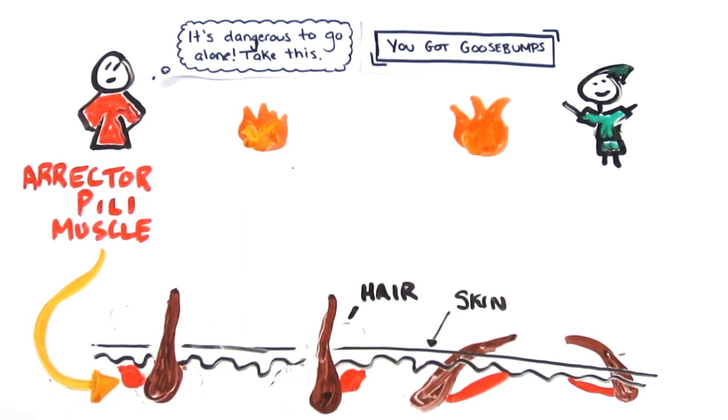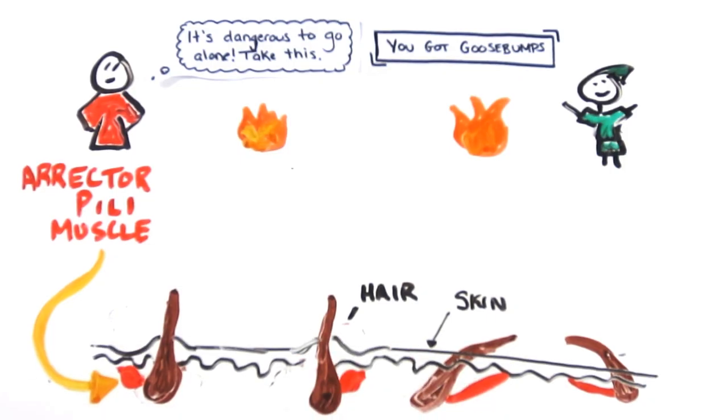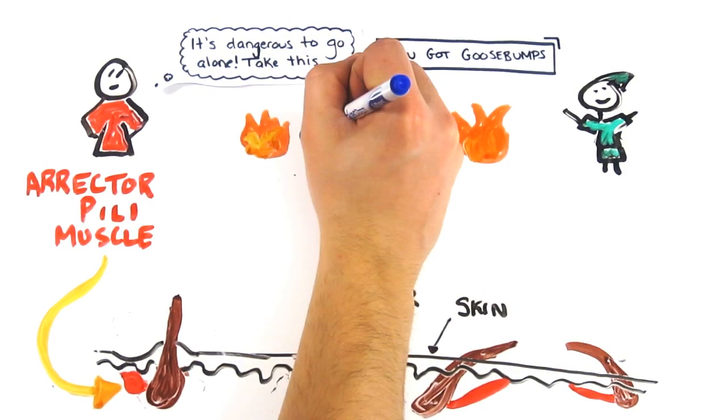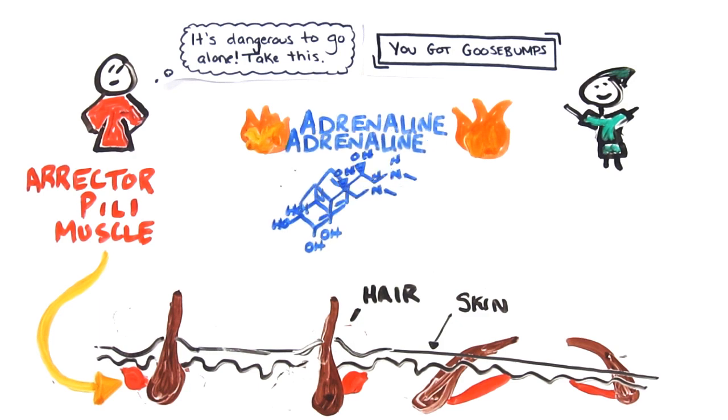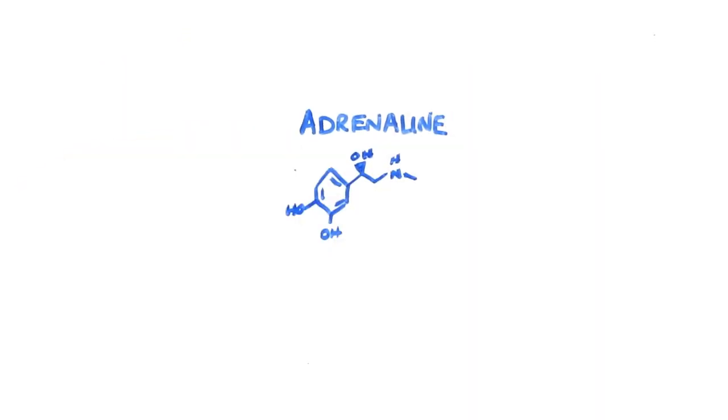This contraction creates a shallow depression around the hair, causing the surrounding area to protrude, and it's the stress hormone adrenaline which triggers this physiological change to occur. So what triggers adrenaline?